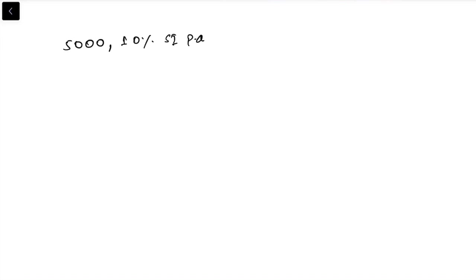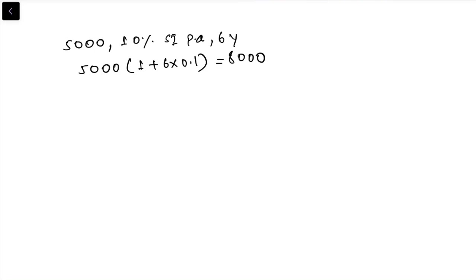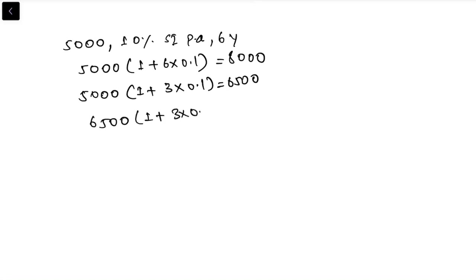Let's look at one example. Suppose an investor deposits 5,000 into a savings account that pays 10% simple interest per annum. The accumulated amount after 6 years is 5,000 × (1 + 6 × 0.1) = 8,000. Now if you invest for only 3 years, you get 5,000 × (1 + 3 × 0.1) = 6,500. If you then reinvest that 6,500 for another 3 years, you get 6,500 × (1 + 3 × 0.1) = 8,450.